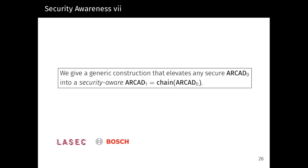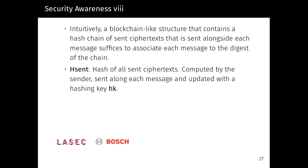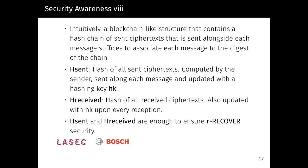In the following, we give a generic construction that elevates any secure RCAT_0 into a security-aware RCAT_1, denoted by Chain of RCAT_0. Intuitively, a blockchain-like structure that contains a hash chain of sent ciphertexts that is sent alongside each message suffices to associate each message to the digest of the chain. For this, we define some auxiliary variables. H_send is the hash of all sent ciphertexts computed by the sender and sent along each message and updated with a hashing key hk. H_received is the hash of all received ciphertexts also updated with the hashing key upon every reception. It should be easy to see that H_send and H_received are enough to ensure r-RECOVER security since those two variables only need to be compared upon every message reception.